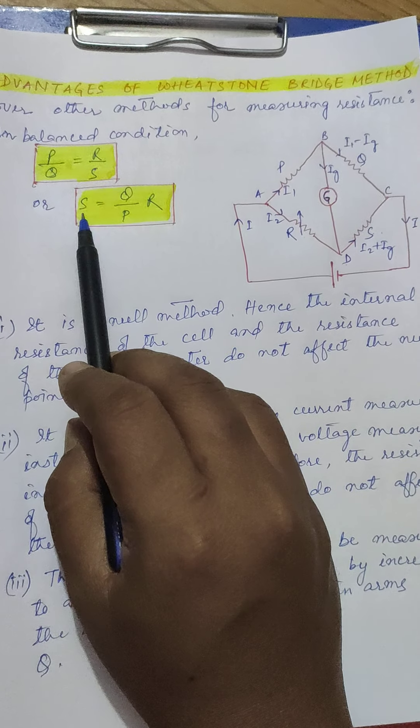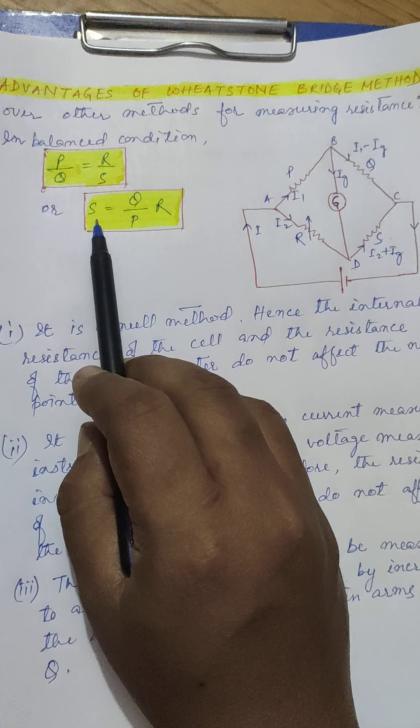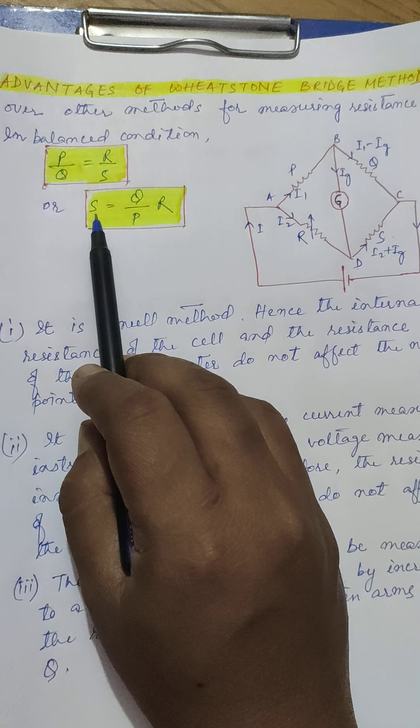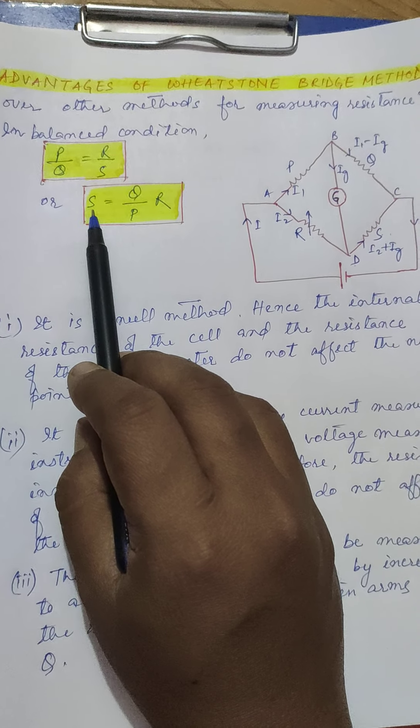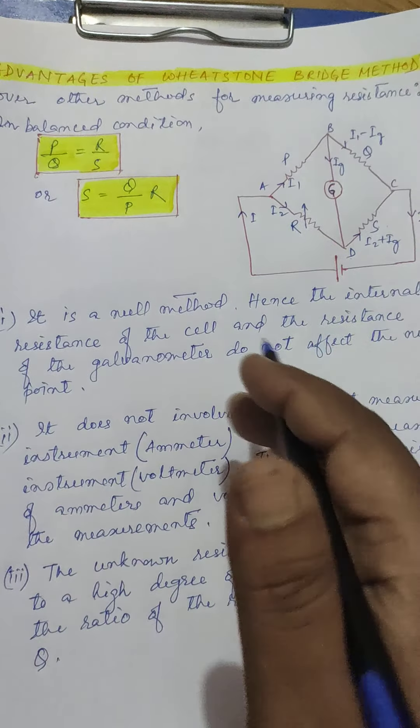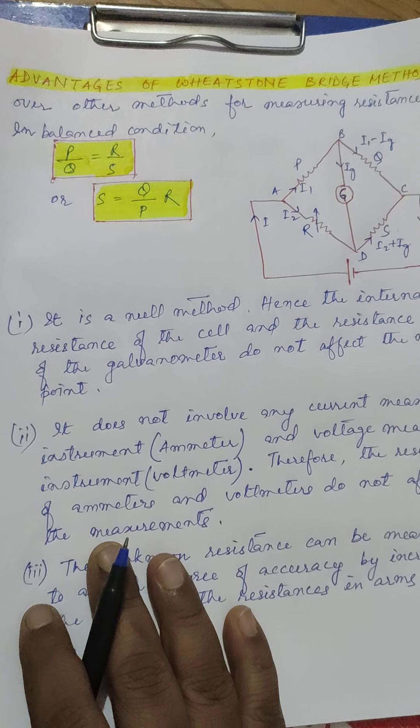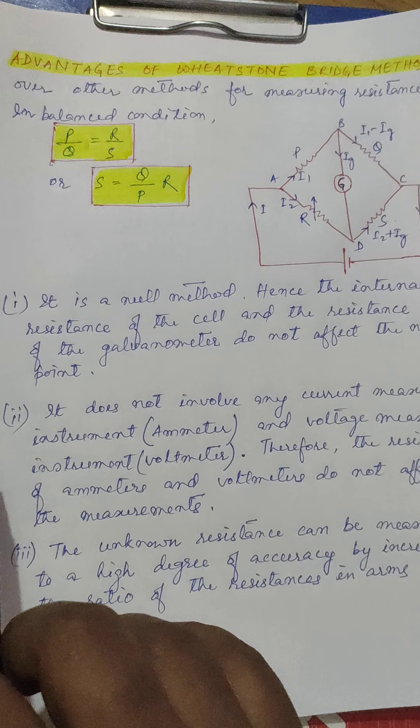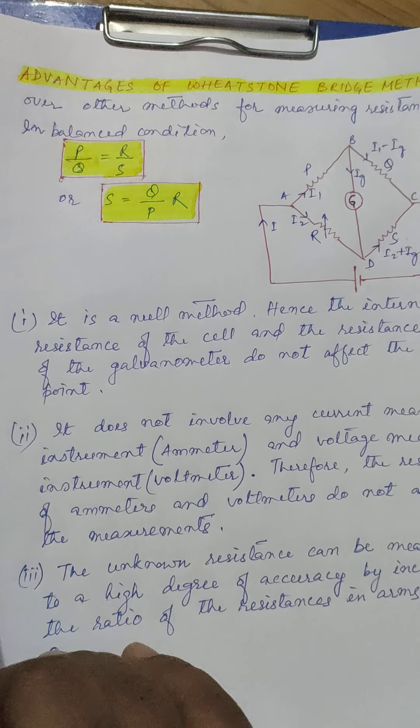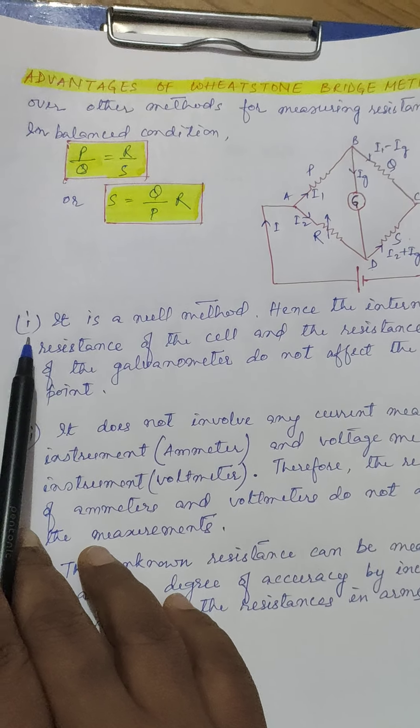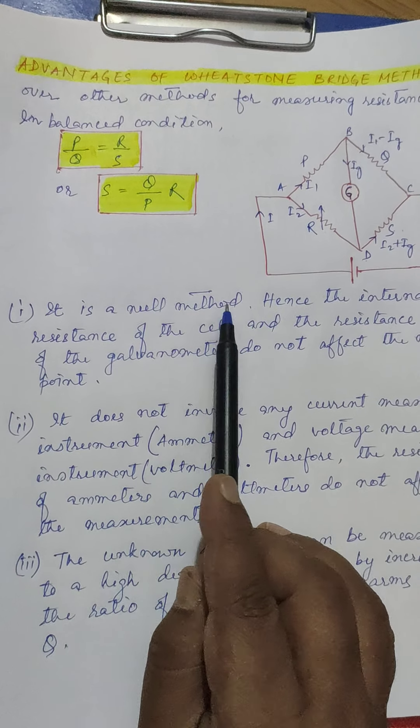So this method of calculating the unknown resistance is a much more accurate method as compared to other methods. Let us discuss why it is so. The first is it is a null method.